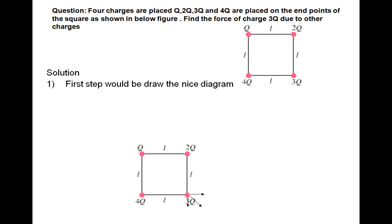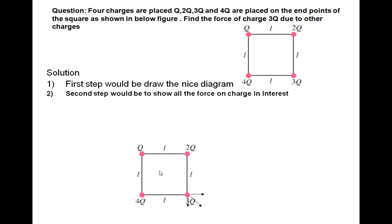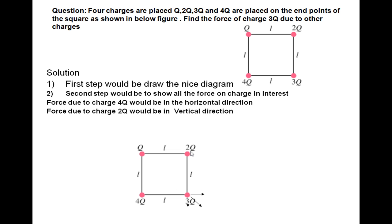Following the steps: first, we draw a nice diagram of the square with the charges. Second, we show all the forces on the charge of interest, 3Q. The force due to charge 4Q is in the horizontal direction — since both are positive charges, it is repulsion acting along that side. The force due to charge 2Q is in the vertical direction, also repulsion. The force due to charge Q is along the diagonal direction, again repulsion since all charges are of the same sign.